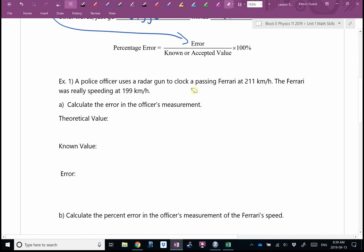For example, a police officer uses a radar gun to clock a passing Ferrari at 211 kilometers per hour. But the GPS on the Ferrari was really speeding at 199 kilometers per hour. The radar gun is off. Calculate the error in the officer's measurement. So what's the theoretical measured value? 211. What's the correct value? 199. What's the error in measurement? Well, if I was writing this as an equation, I would go with the absolute value of 211 minus 199. Or I already heard somebody do the math in their head. I heard somebody say, I think it's 12.